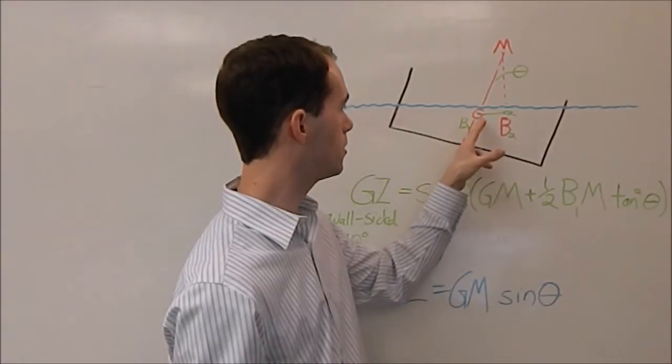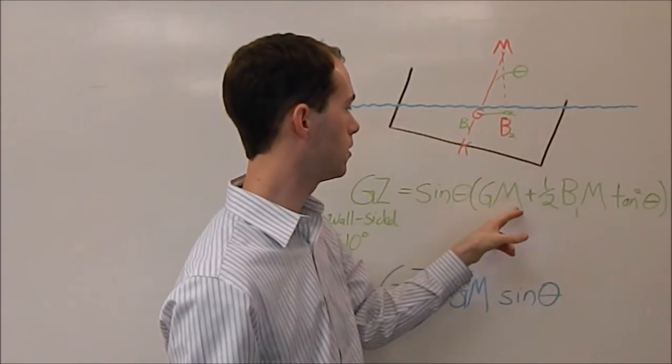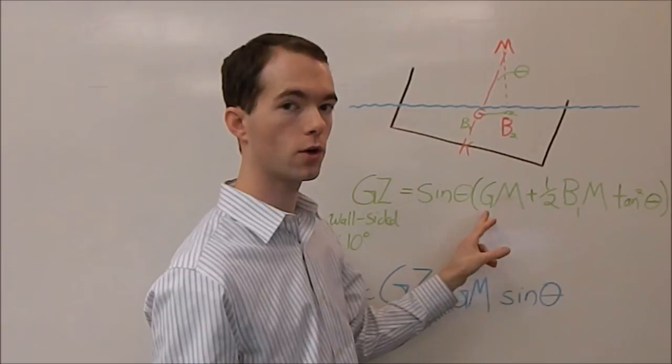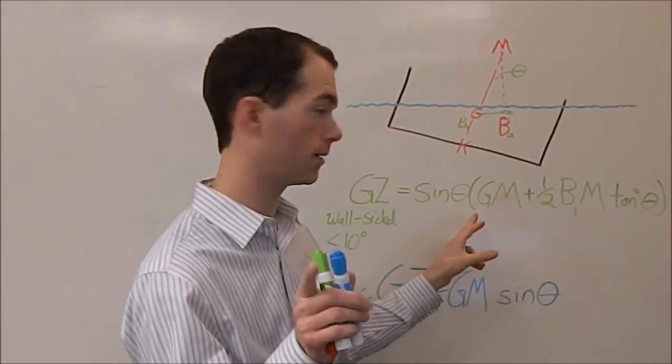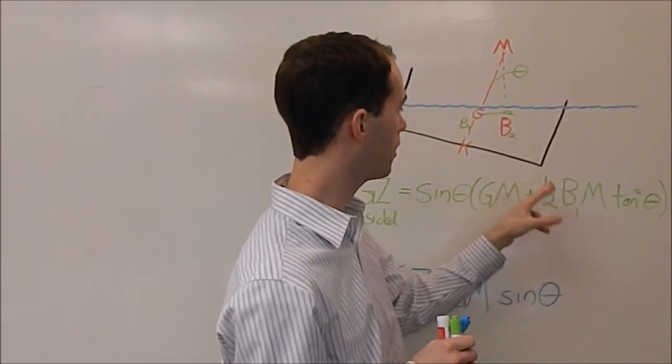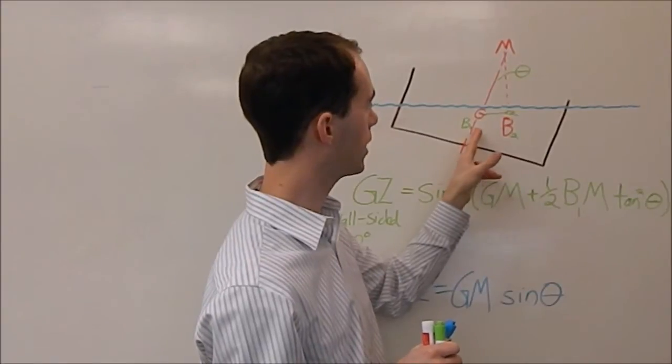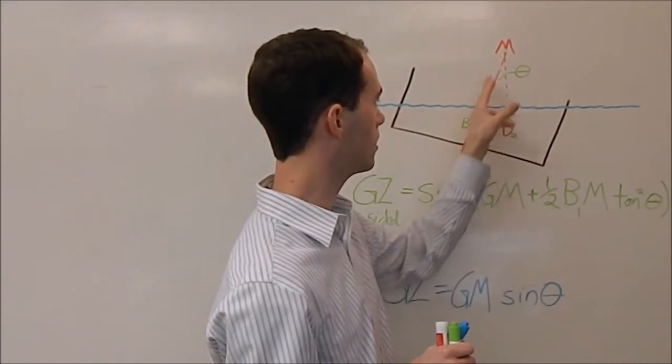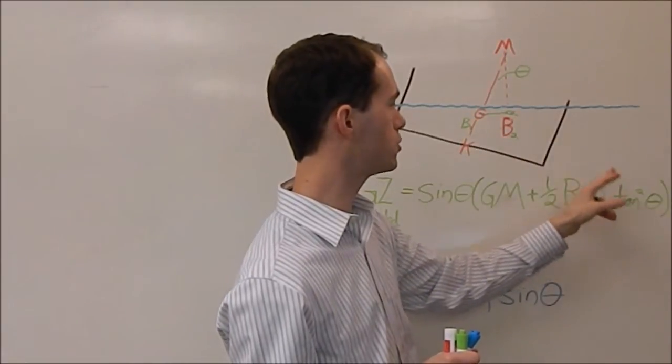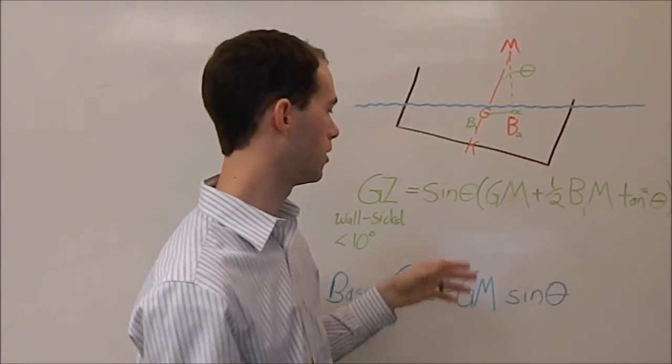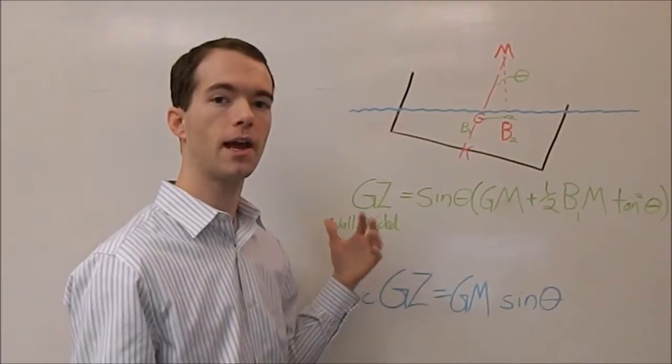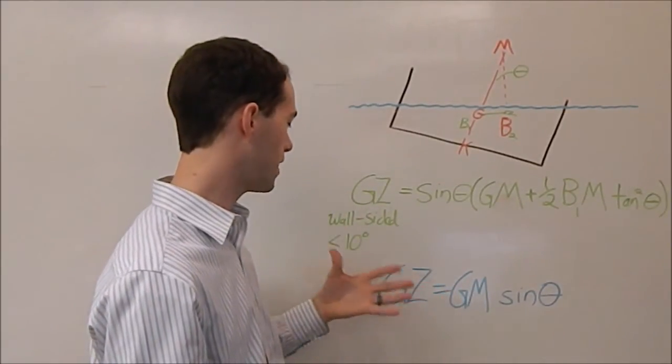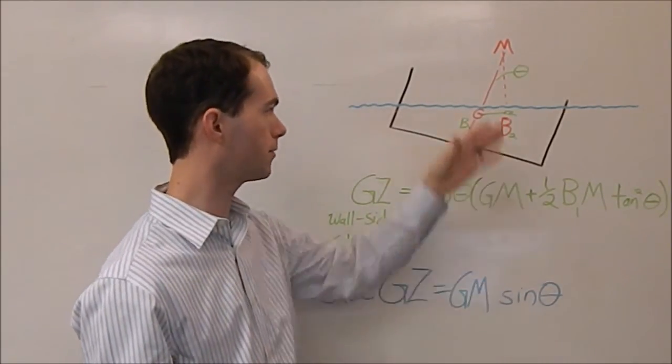Which is your center of gravity, to M, which we don't know yet because we don't know KG. But I'm going to show you how to get that in just a second. Plus one-half B1, which is your original location of center of buoyancy, BM, which was this length here, times tangent squared of theta, which is your heel angle. That's pretty simple.